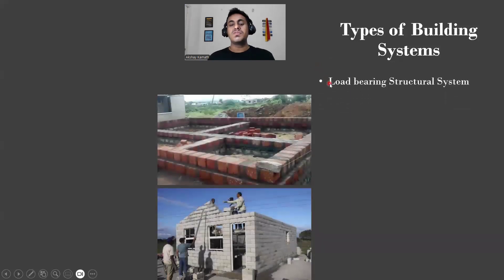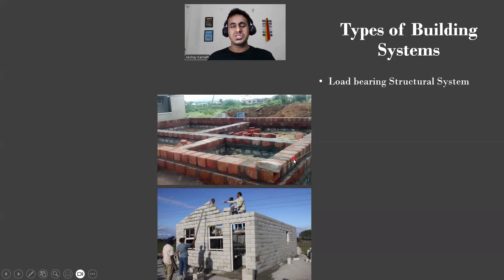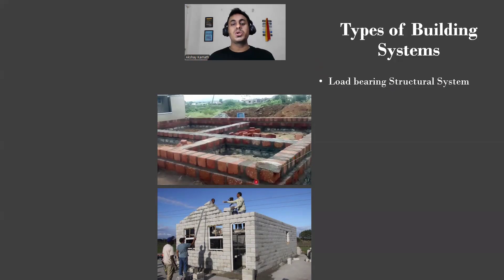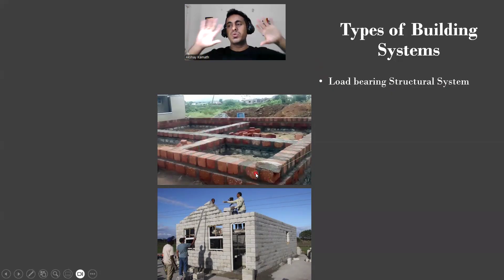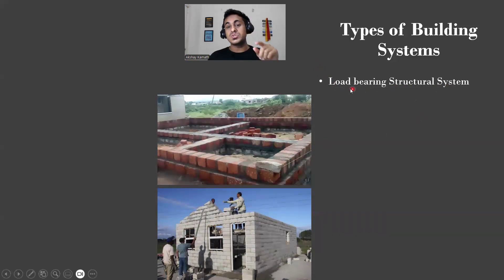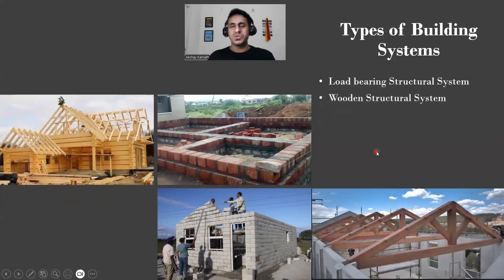The first building system is the load-bearing structural system, which we used previously. Here we make use of laterite stones and construct small G or G+1 story buildings. You cannot have large spaces or big openings, because the entire load comes on the stone wall. If you provide big openings, there is no stone in that area and load transfer will not happen — that's why it's called a load-bearing structural system.